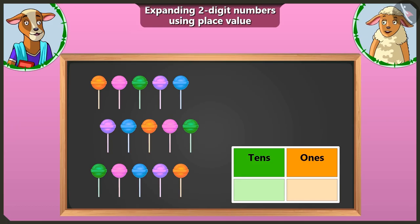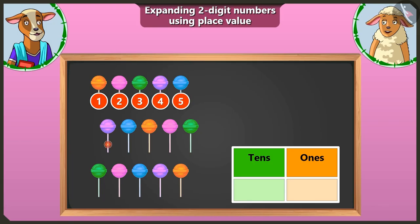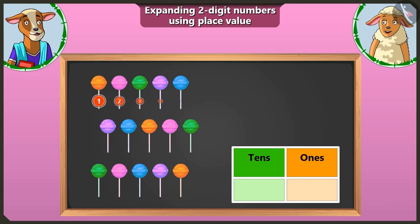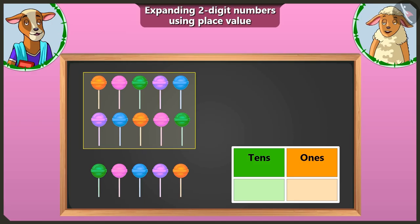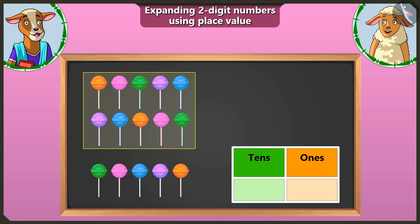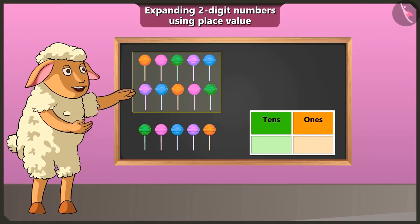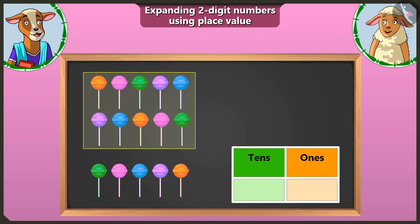Look, here is a lollipop. Now, let us make a bundle of ten of these and write the number. One, two, three, four, five, six, seven, eight, nine and ten. This is a group of ten lollipops. We have one group of ten lollipops, so we will write one in the box of tens.